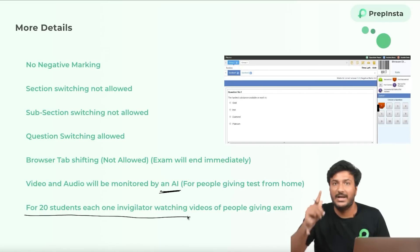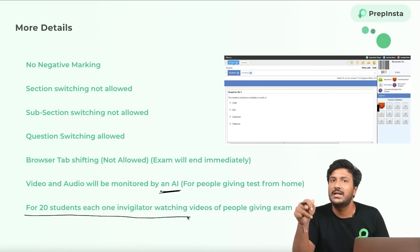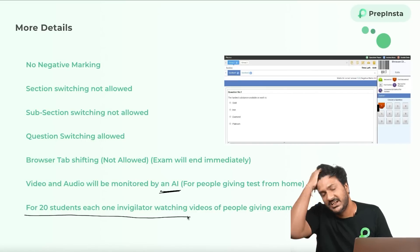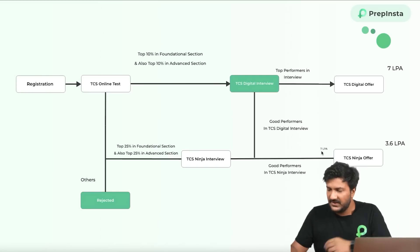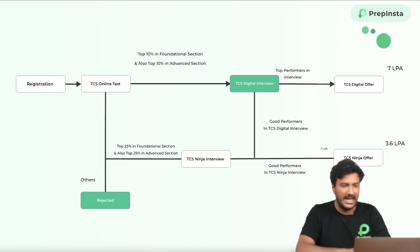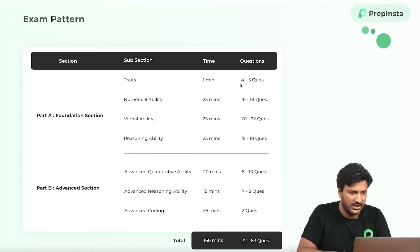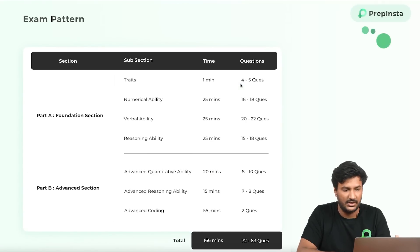One invigilator is assigned 20 people, so one person is monitoring 20 candidates giving the test from home. You will not get selected if you are caught cheating. Now, importantly, there are two main sections: a Foundational Section and an Advanced Section. Make a note — you can pause the video to look at the table — because what I'm going to explain has very important relevance to it.